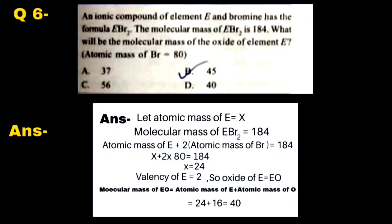Question 6: An ionic compound of element E and bromine has the formula EBr2. The molecular mass of EBr2 is 184. What will be the molecular mass of the oxide of element E? (Atomic mass of bromine = 80.) Options: A: 37, B: 45, C: 56, D: 40.